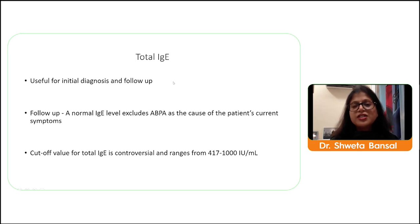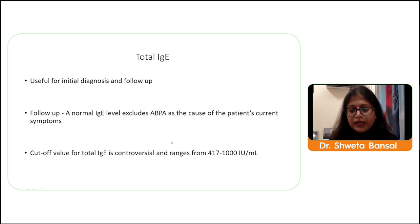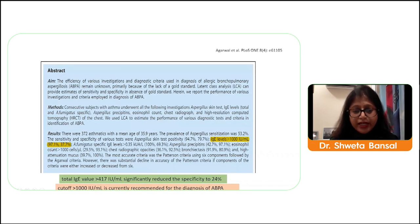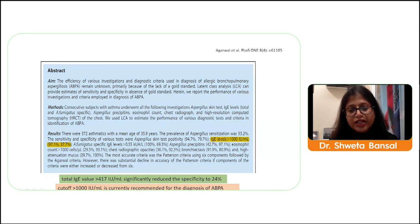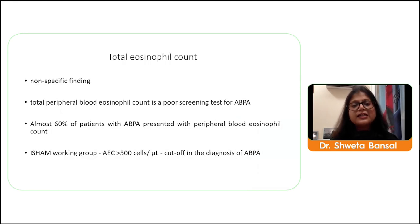Total IgE is a common routine test. Different cutoffs have been proposed — IgE more than 1000 IU/mL has sensitivity of 97 percent but specificity of only 37 percent. When the cutoff of 417 is taken, specificity drops further to 24 percent. The ISHAM group recommends more than 1000 international units per mL as a criterion for ABPA diagnosis. Total IgE is a good sensitive test but with low specificity; however, it can be used for objective follow-up monitoring of response and exacerbation.